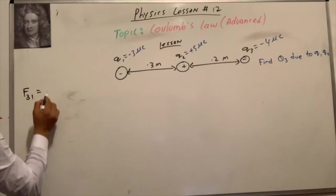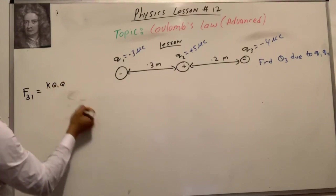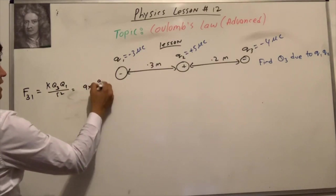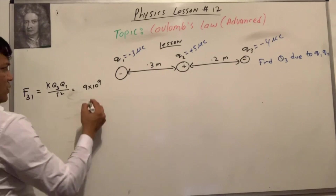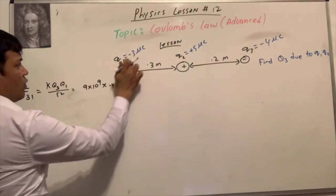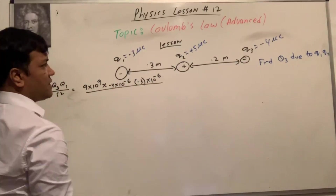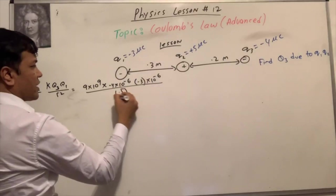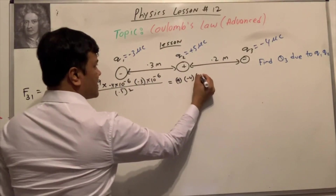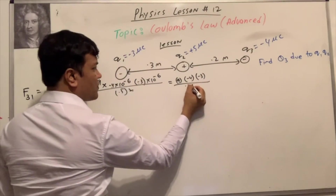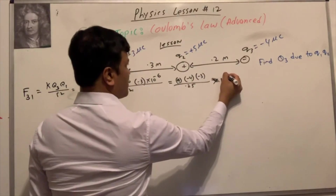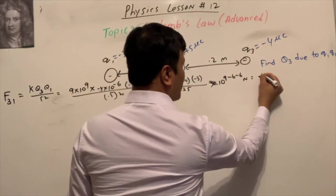Let's do q3 and q1 first. F31 equals k times q3 times q1 over r squared. k is 9 times 10 raised to 9 Newton meter squared over coulomb squared. q3 is negative 4 times 10 raised to negative 6, q1 is negative 3 times 10 raised to negative 6, and r squared is 0.5 squared, which is 0.25. So 9 times negative 4 times negative 3 divided by 0.25, times 10 raised to 9 minus 6 minus 6, gives approximately 0.43 Newton.